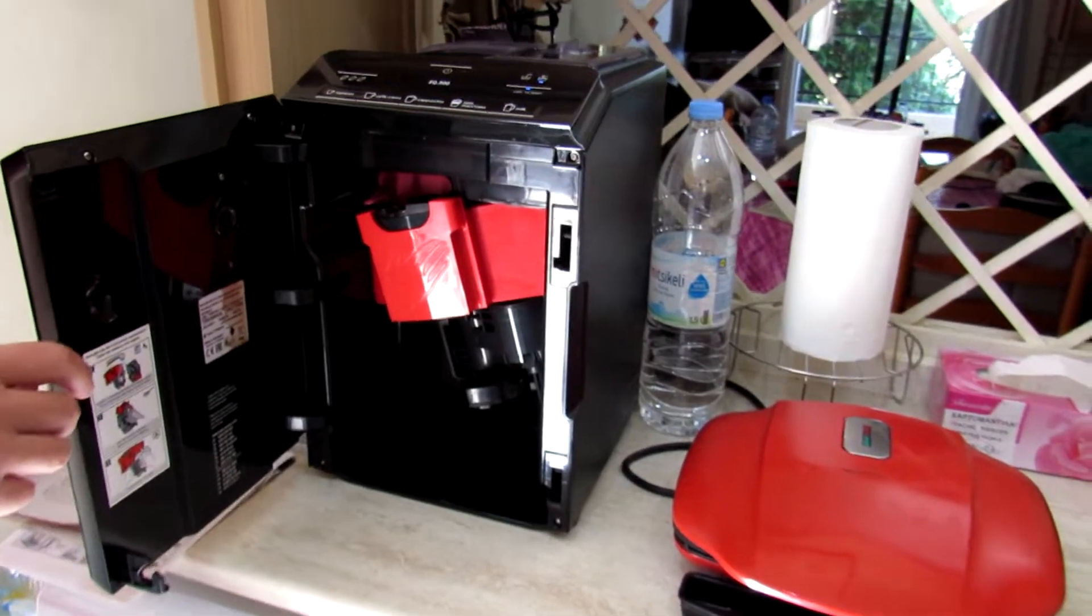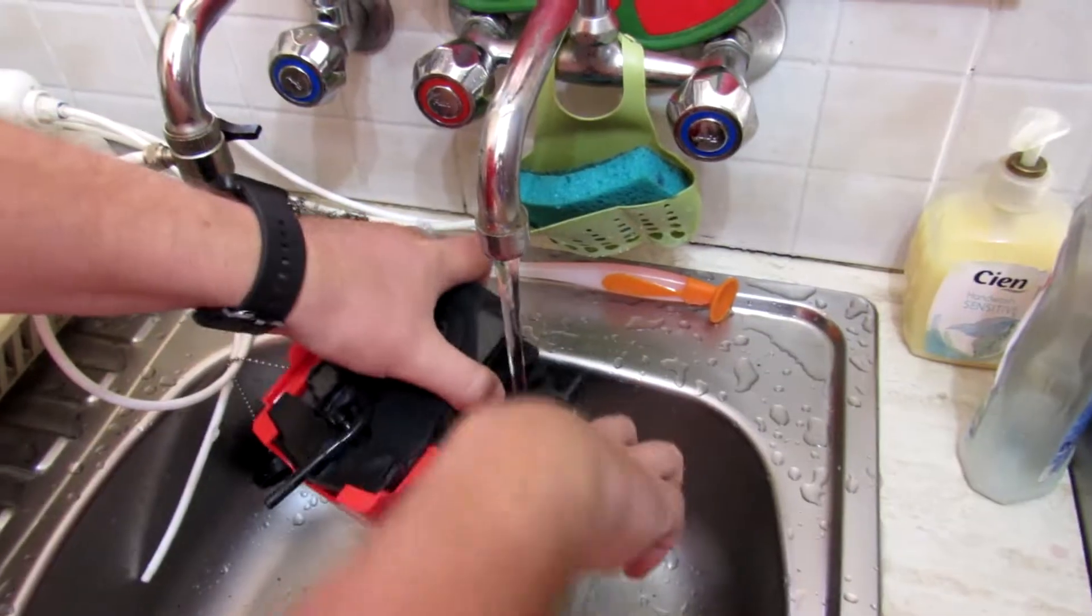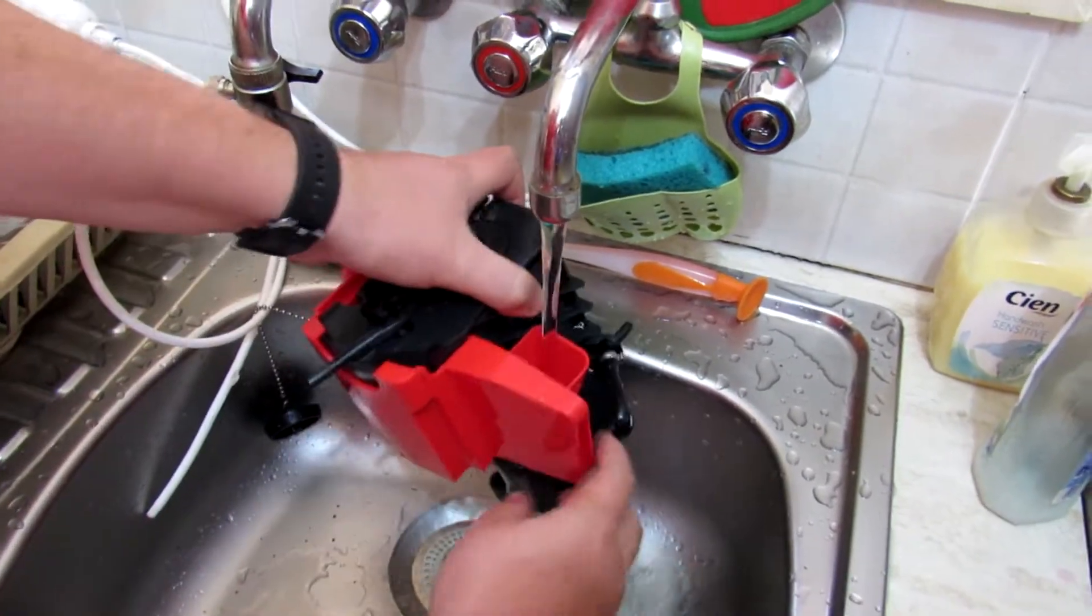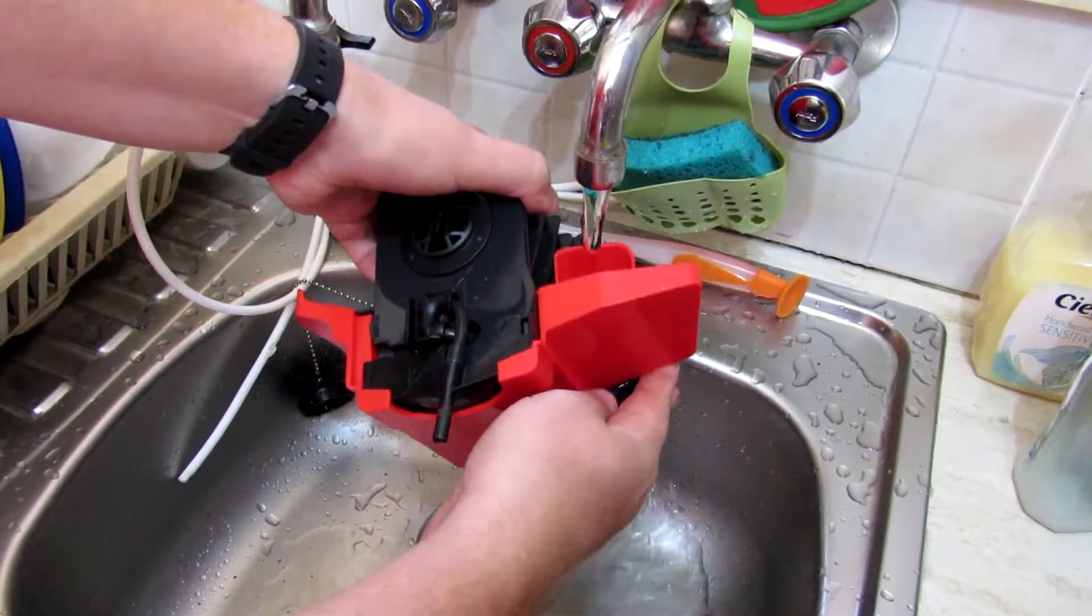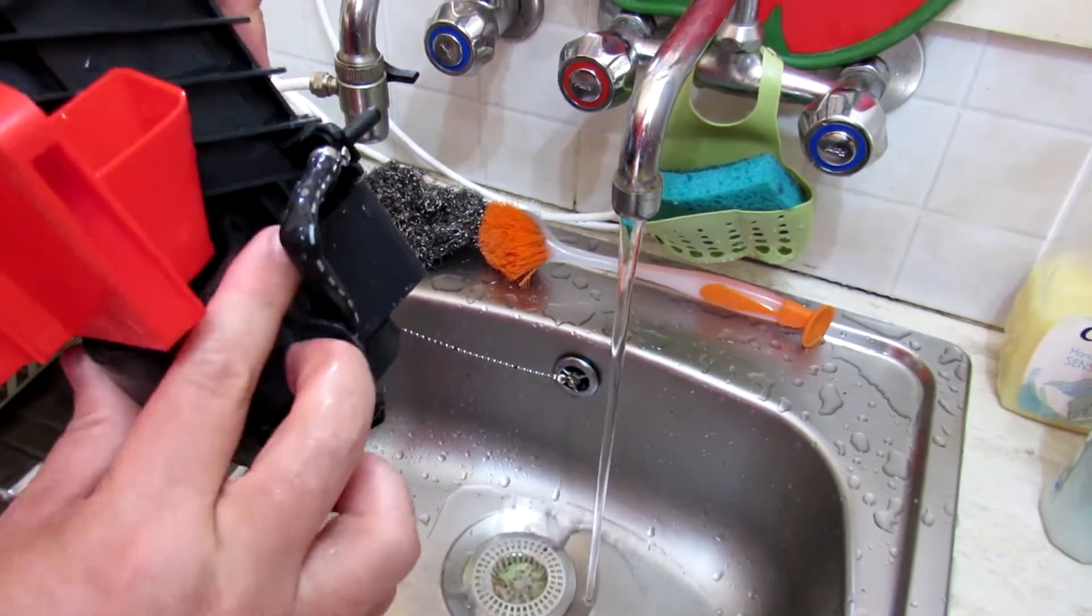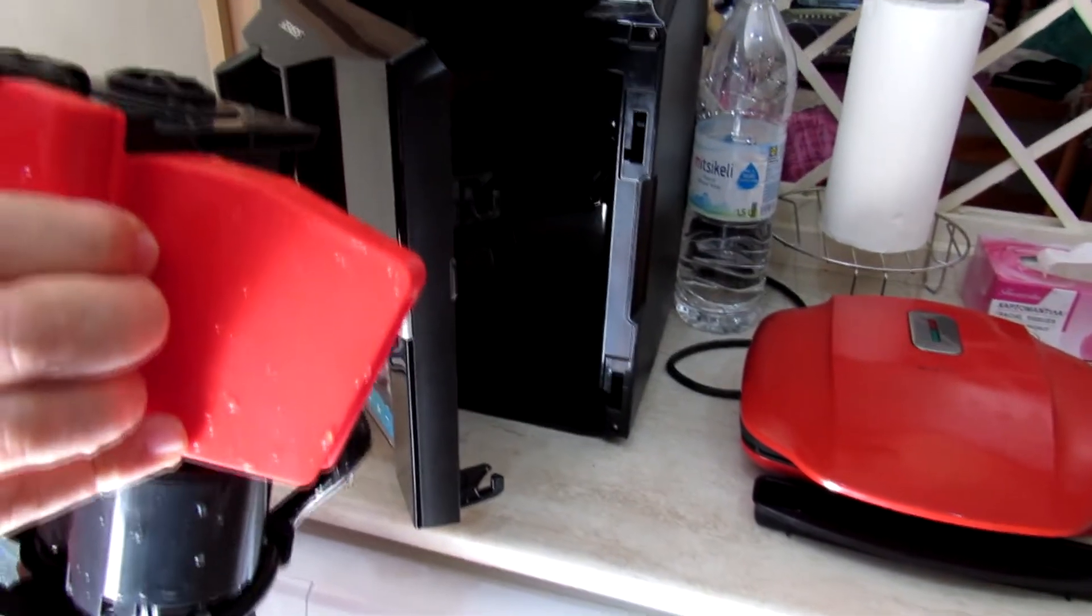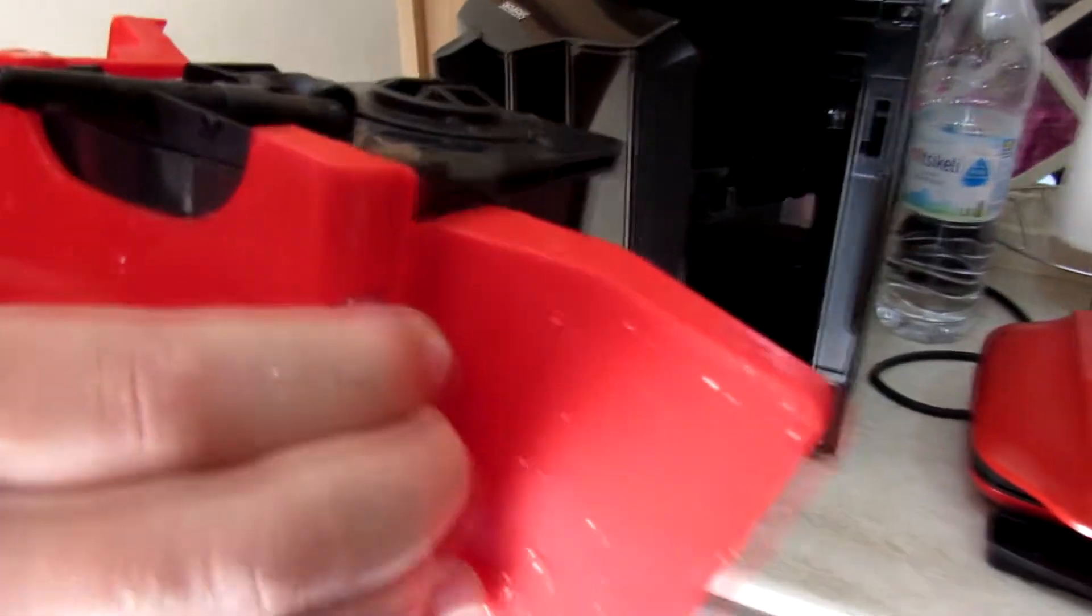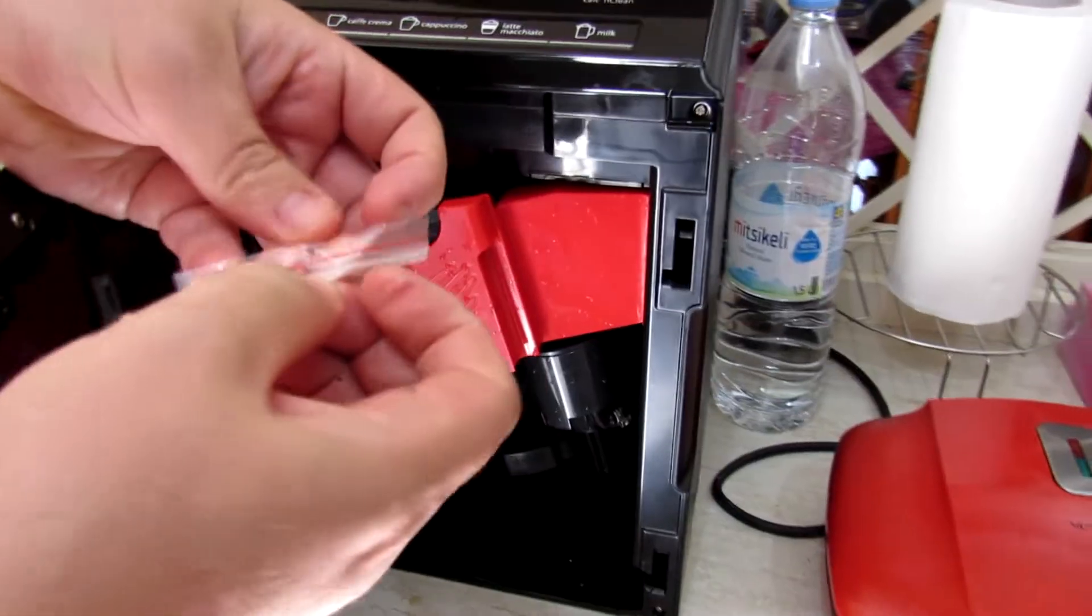Step 3: Remove and clean the brewing unit. Place a Siemens cleaning tablet in the brewing unit and reinsert the unit. We do not have Siemens tablet, we have Aliexpress tablet. I think two pills of tablets will be enough.